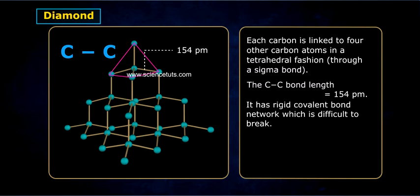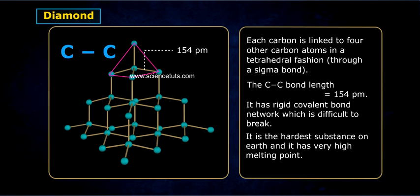It has a rigid covalent bond network which is difficult to break. It is the hardest substance on earth and it has very high melting point. It acts as an electrical insulator.